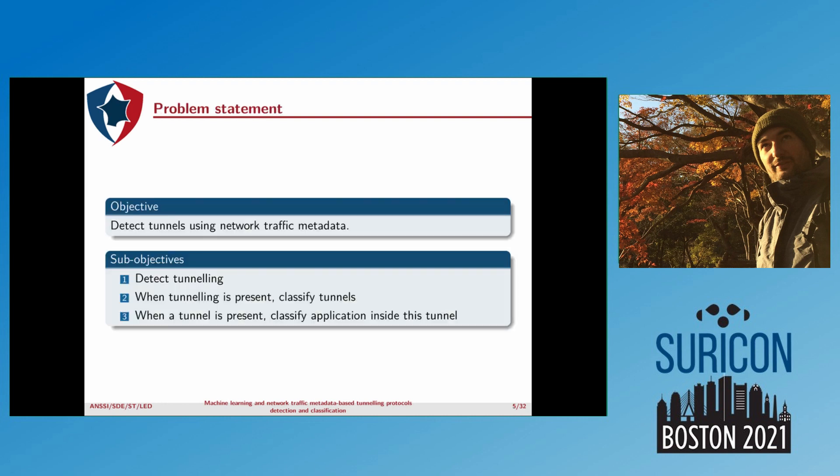The objective of this work is to detect tunneling occurring in network traffic data. We actually have three sub-objectives: the first one is to detect tunneling itself; the second is to classify tunnels when tunneling is detected; and the third sub-objective is to classify the application when a tunnel is detected.